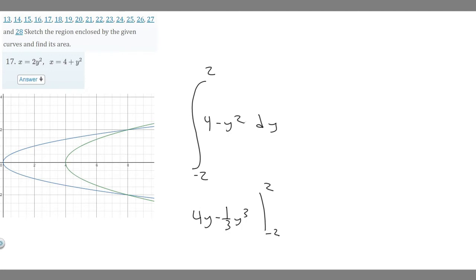Let's plug in 2 first. We'll plug in 2, get a value, then subtract the lower bound value. So plugging in 2: 4(2) - ⅓(2)³ = 8 - ⅓(8) = 8 - 8/3.